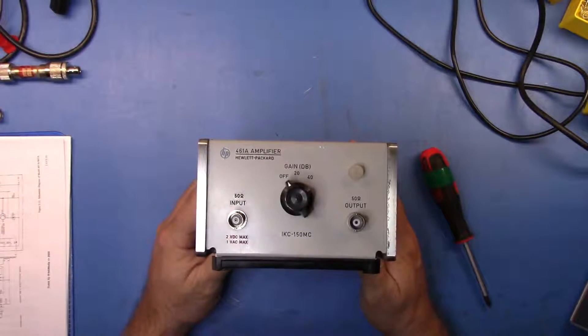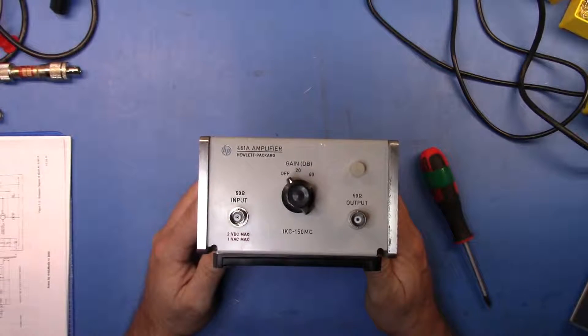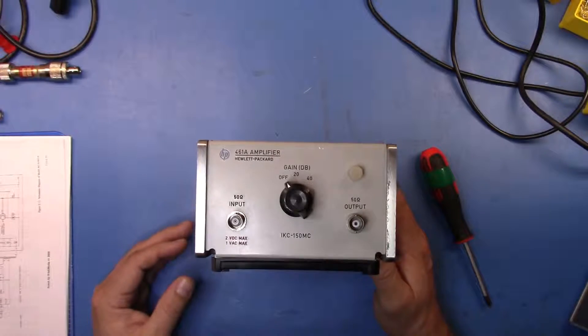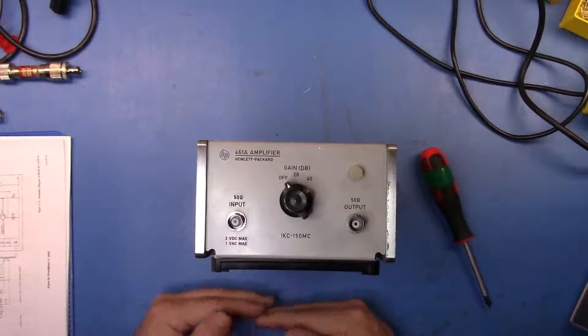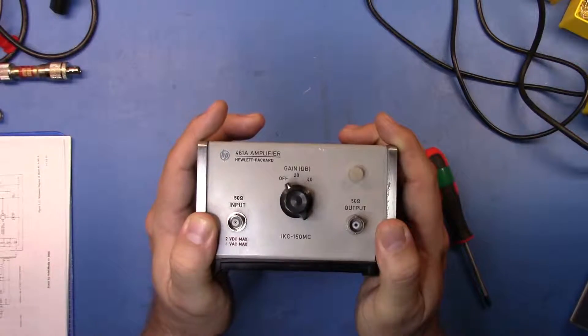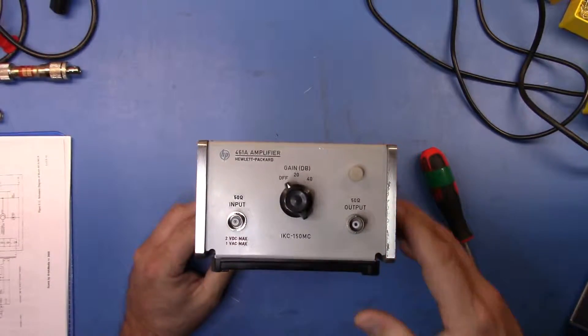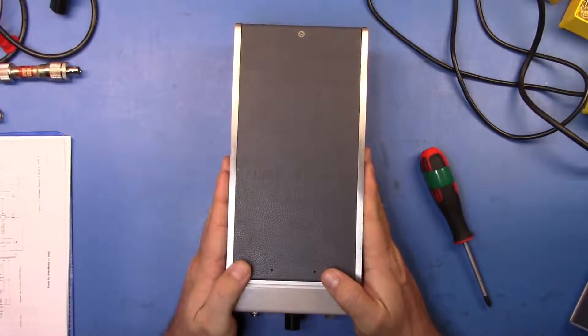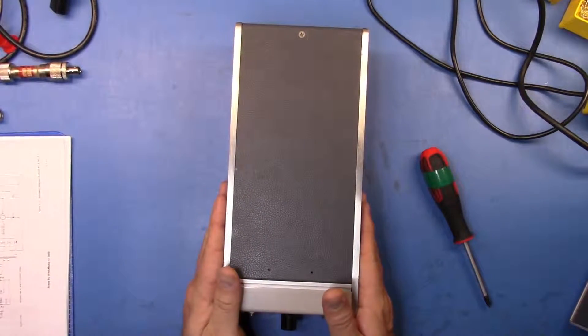Now this is a fairly wide bandwidth amplifier. It runs from about 5 kHz to 150 megahertz and it should be essentially flat and distortion-free across that. I got this to help me increase the levels of some signals as I calibrate a bunch of this old gear. So let's take a look inside. It's quite a classic design from that era.